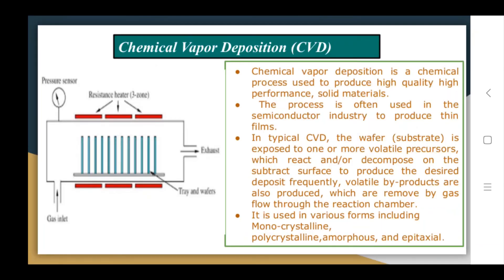Chemical Vapor Deposition (CVD) is a chemical process used to produce high-quality, high-performance solid materials and is often used in the semiconductor industry to produce thin films. In a typical CVD process, the wafer (substrate) is exposed to one or more volatile precursors which react and decompose on the substrate surface to produce the desired deposit. By-products are removed by gas flow through the reaction chamber. CVD is used in various forms including monocrystalline, polycrystalline, amorphous, and epitaxial applications.